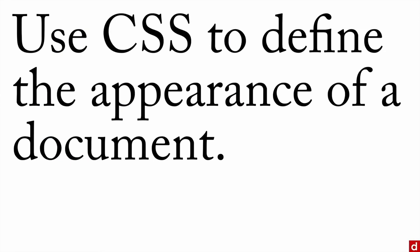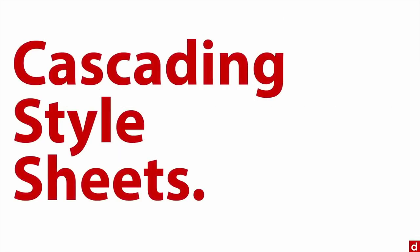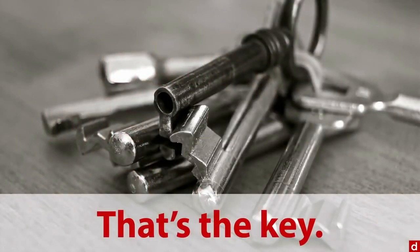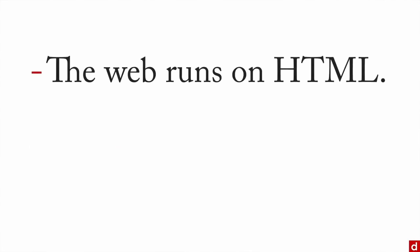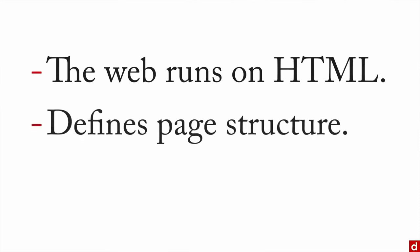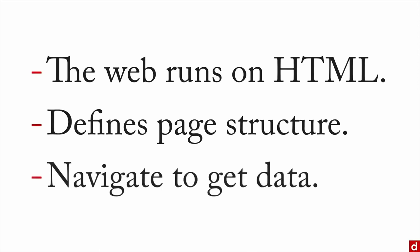I'll also mention CSS — cascading style sheets. Web pages use CSS to define the appearance of a document; HTML is theoretically there to give the content, and CSS gives the appearance. I'm not going to worry about that right now because we're really interested in the content. So in sum: the web runs on HTML, which defines the page structure and content, and you need to learn how to navigate the tags and structure in order to get data from web pages for your data science projects.